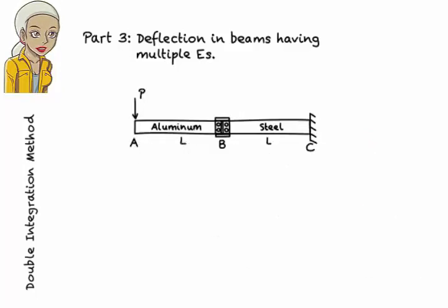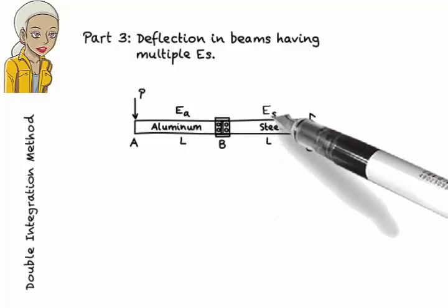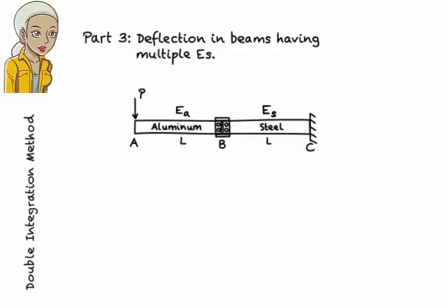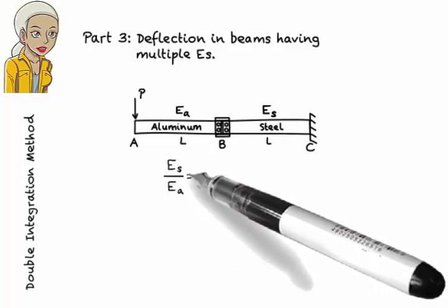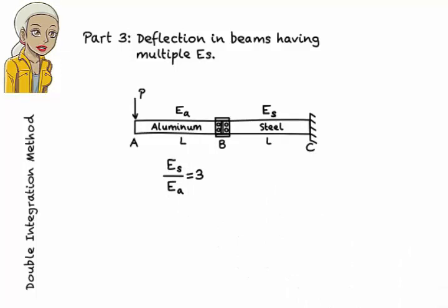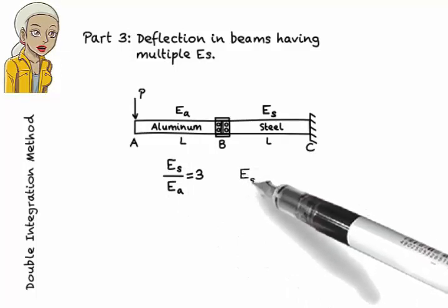It is important to note that here we cannot assume a constant modulus of elasticity for the beam, as aluminum and steel have different E values. Let's refer to the modulus of elasticity for aluminum as E sub A, and use E sub S for the modulus of elasticity of steel. For ease of calculations, let's assume the ratio of E sub S to E sub A is 3, or E sub S equals 3 times E sub A.